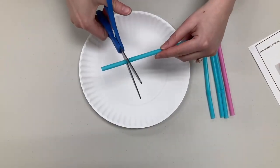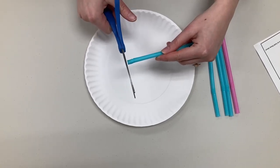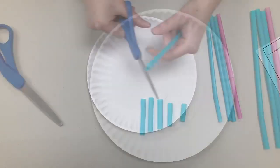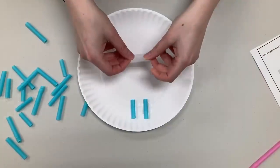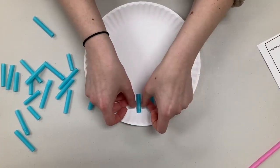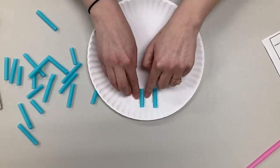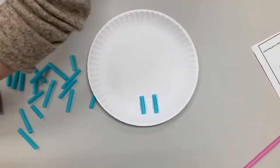Now you can start cutting your straw into all different sizes like so. Begin assembling the different pieces of straw onto the plate. The smaller the pieces, the harder the maze can be.